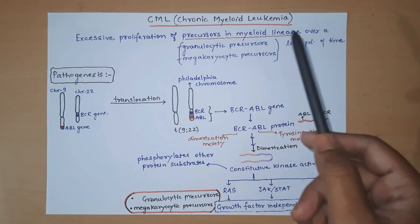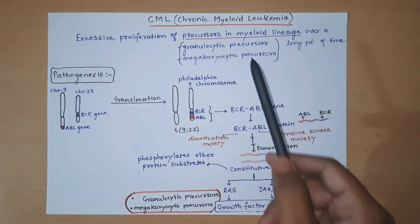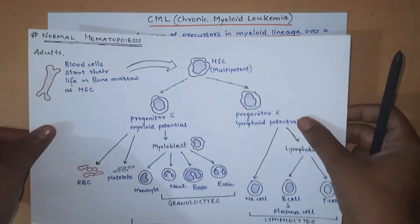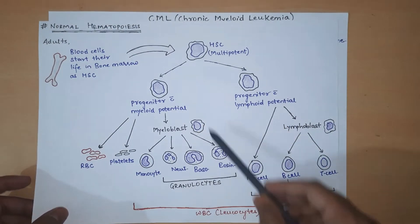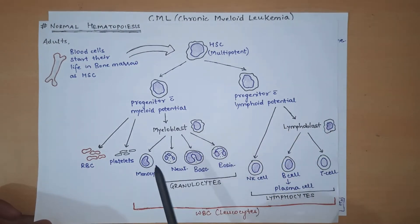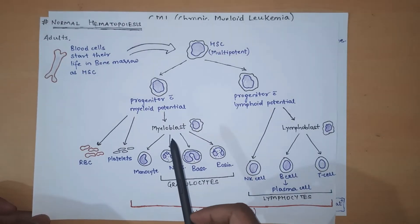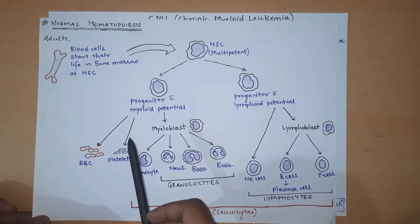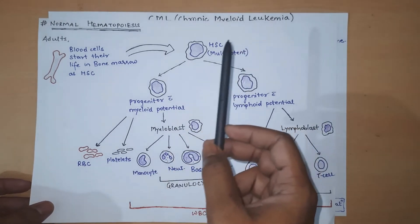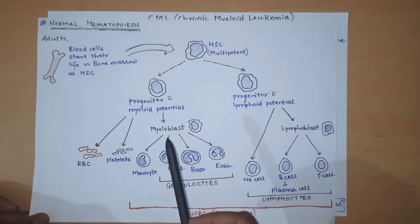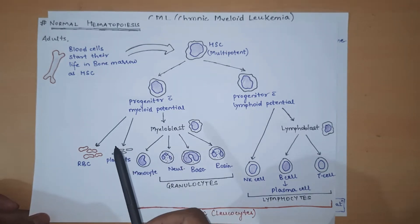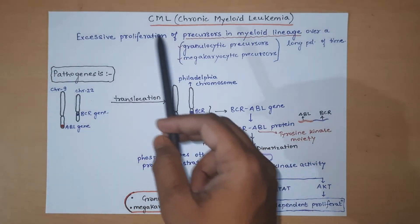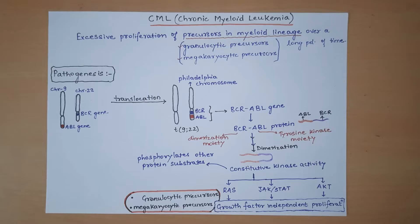The precursors of the myeloid lineage that are mostly affected are the granulocytic precursors and megakaryocytic precursors. We have already seen in normal hematopoiesis that granulocytes are formed by granulocytic precursors and megakaryocytes — that is, platelets — are formed from megakaryocytic precursors. In CML, what develops is the excessive proliferation of the precursors of granulocytes and megakaryocytes.